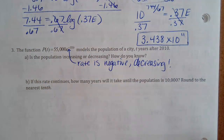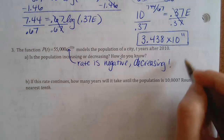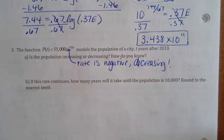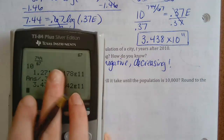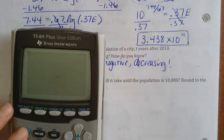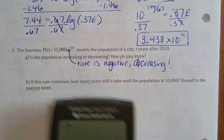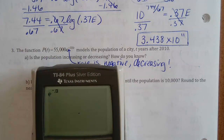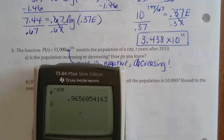You could check by graphing it in the calculator and seeing it decrease. You can also absorb the negative — e to the negative 0.035 is a number less than one, so technically the base of your exponent is less than one, confirming it's decreasing.